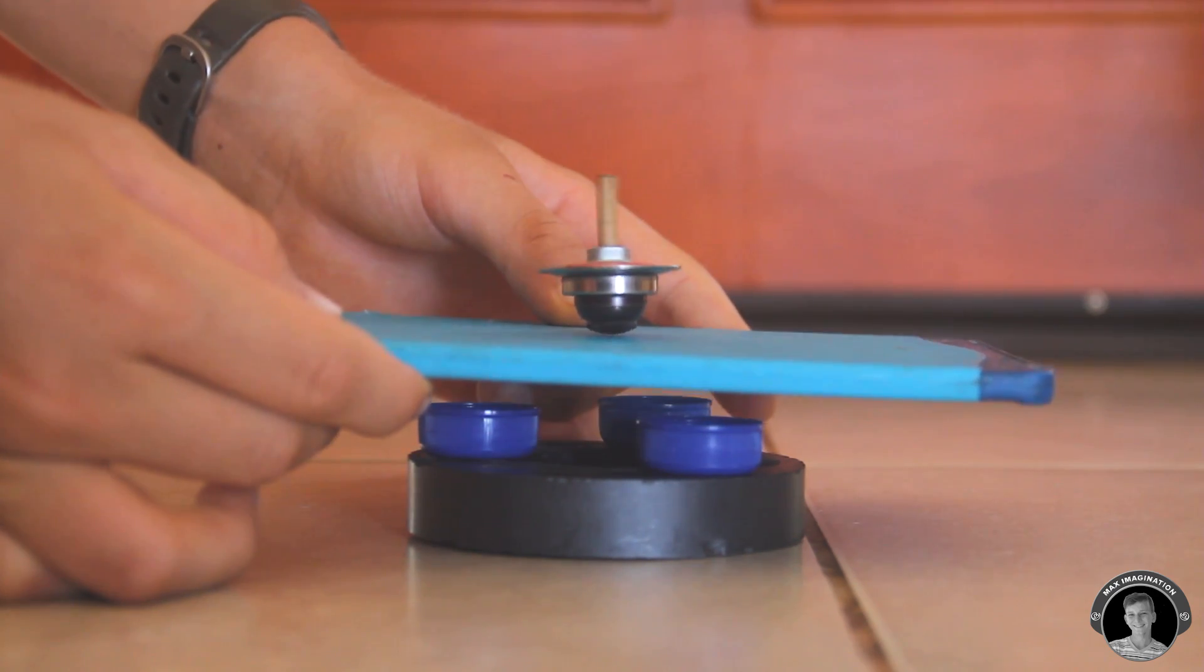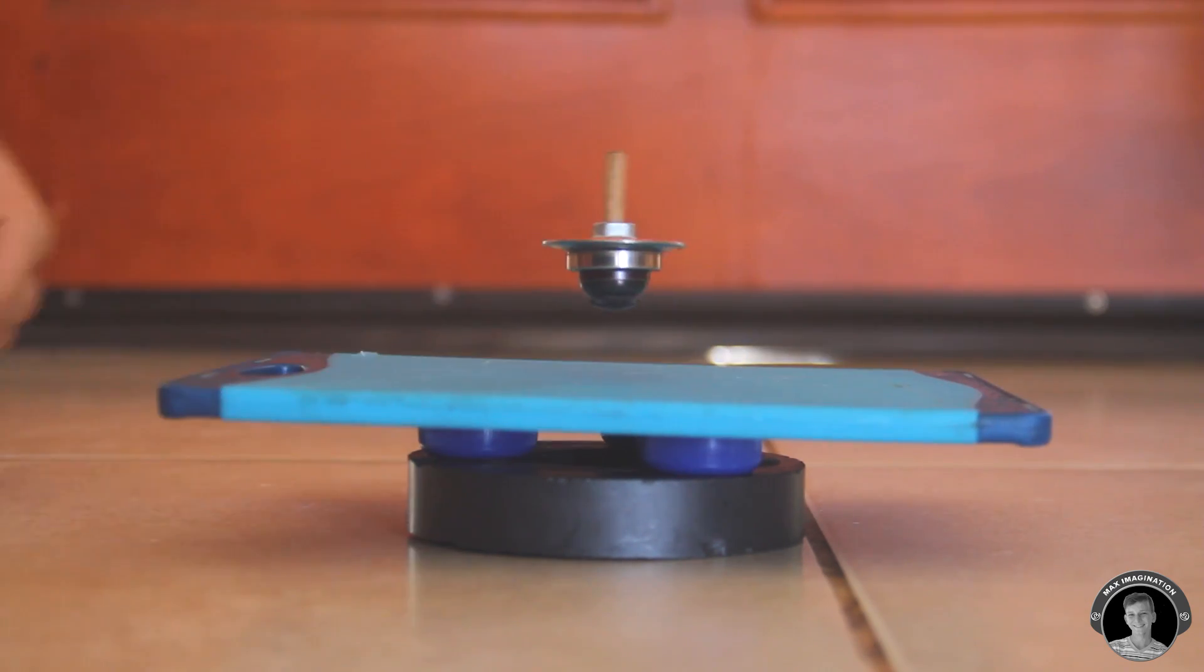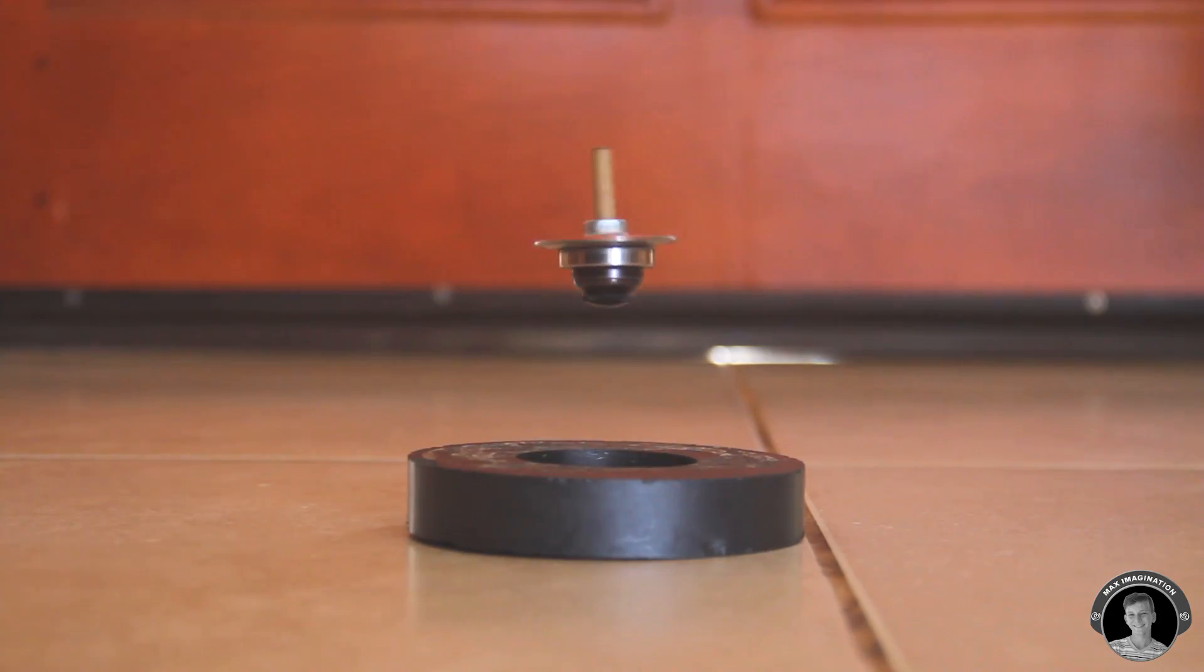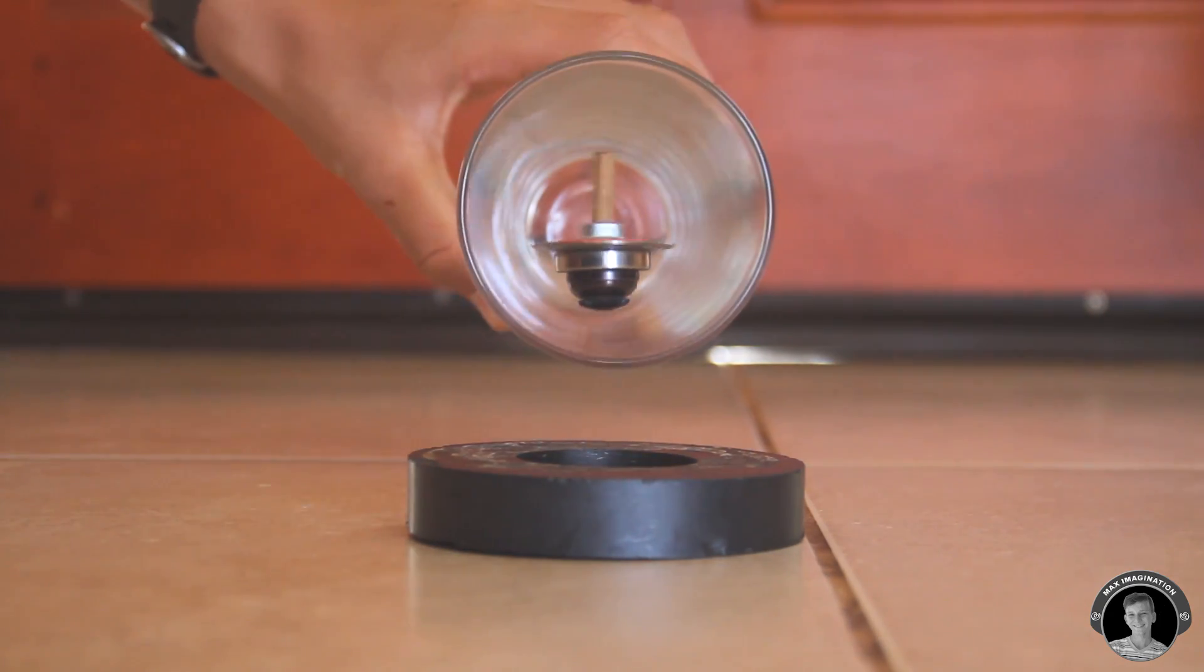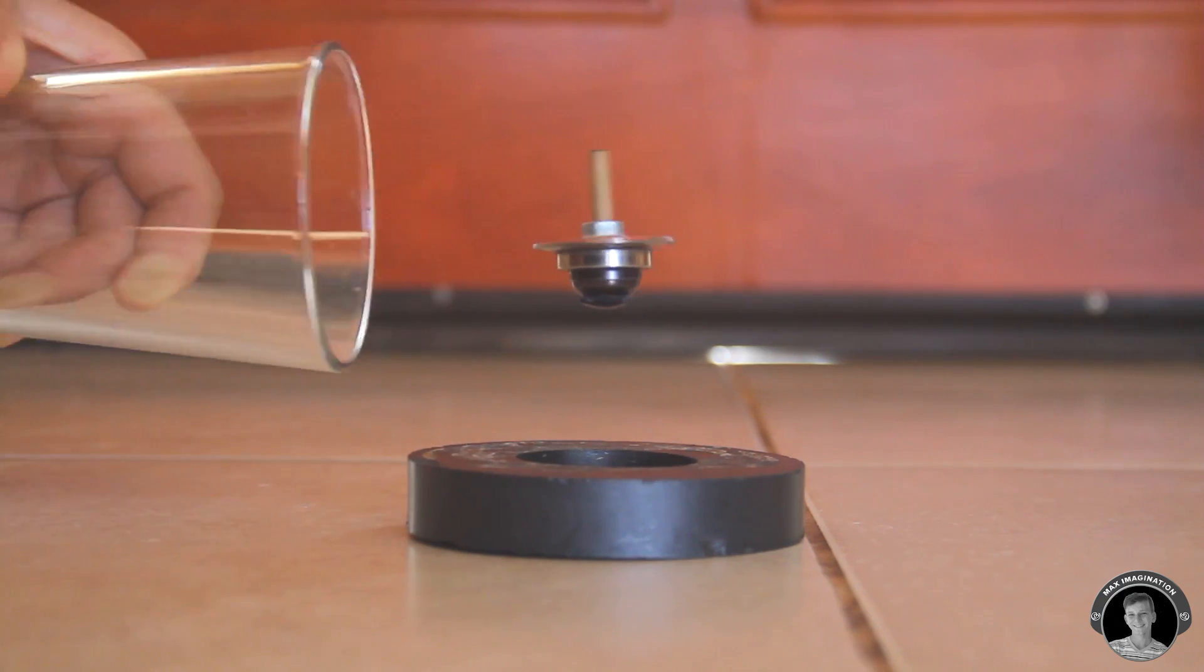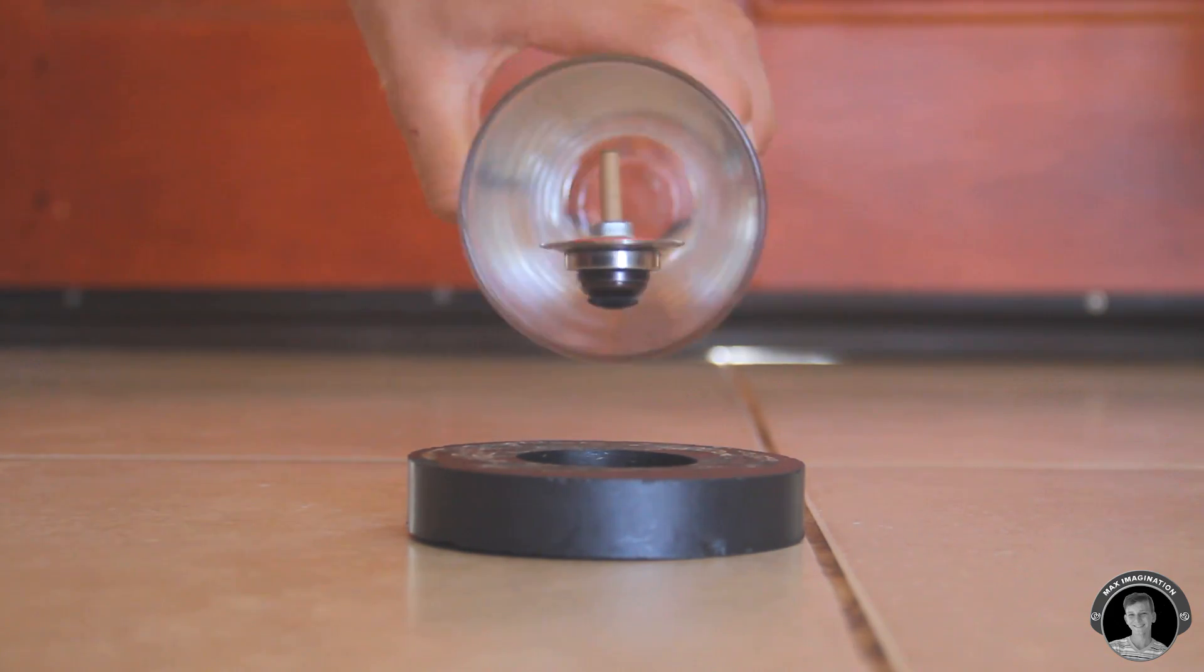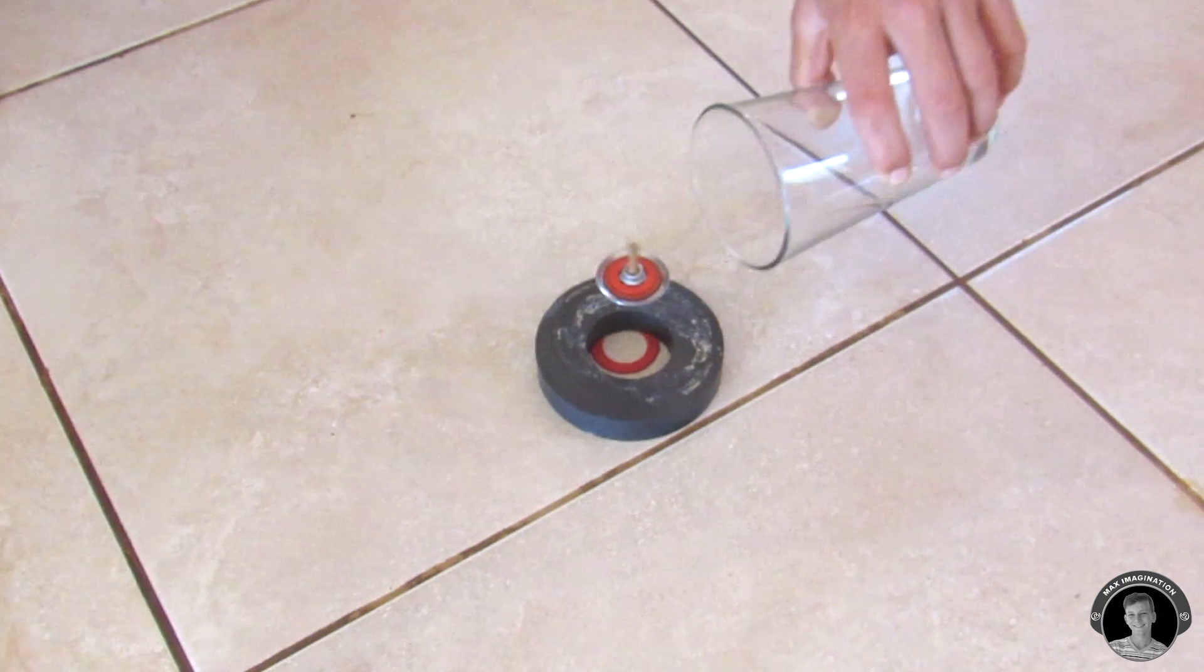So guys, we finally got it levitating. Pretty cool, huh? Now I do just want to say there's different factors you need to make sure of before you go out and conduct this experiment. Air temperature is one of them. Since magnets are sensitive to heat, you may have to adjust something on the spinning top, add a bit more weight or remove some weight.